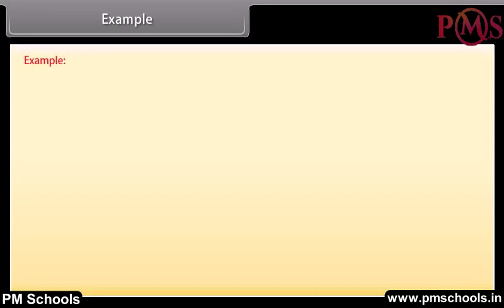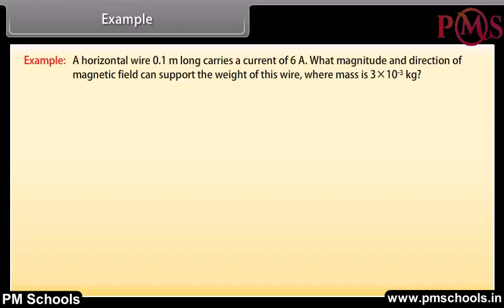Example — magnetic force on a current carrying conductor: A horizontal wire 0.1 m long carries a current of 6 A. What magnitude and direction of magnetic field can support the weight of this wire, where mass = 3 × 10⁻³ kg? Given: L = 0.1 m, I = 6 A, m = 3 × 10⁻³ kg.